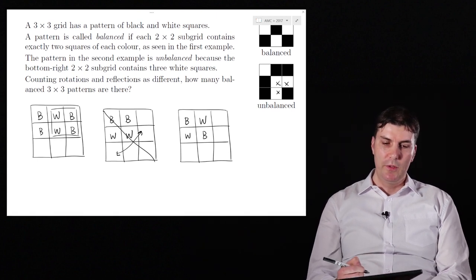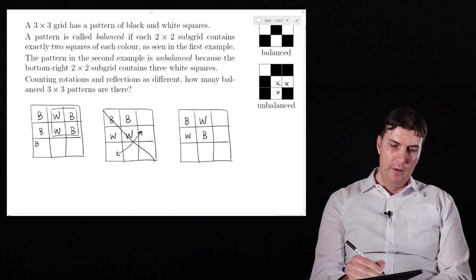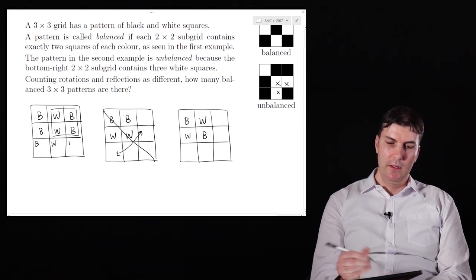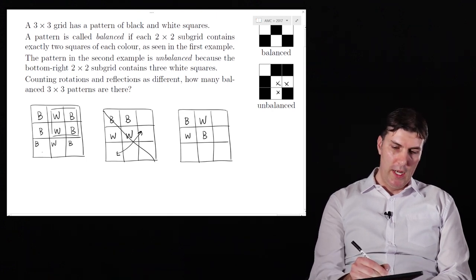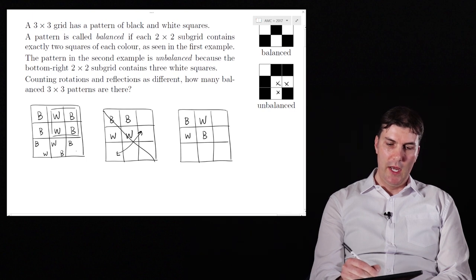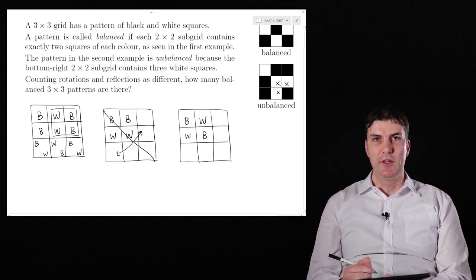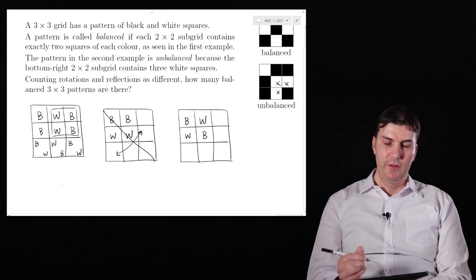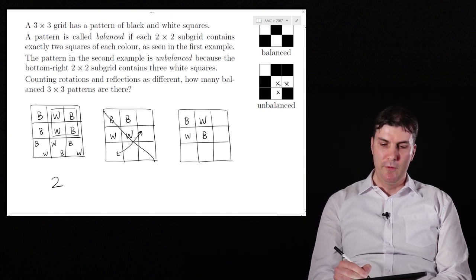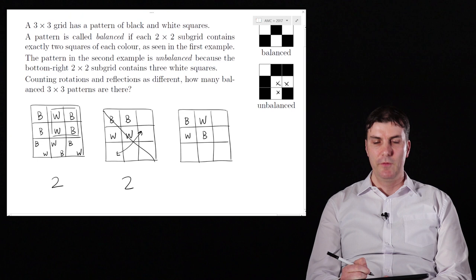The third row, however, we actually have some options. We could go black followed by white followed by black, or we could go white followed by black followed by white. And you can check that those are the only ways that you can complete that second row. So there are two options for this first case, but from what we said before, there are also two options for the second case.